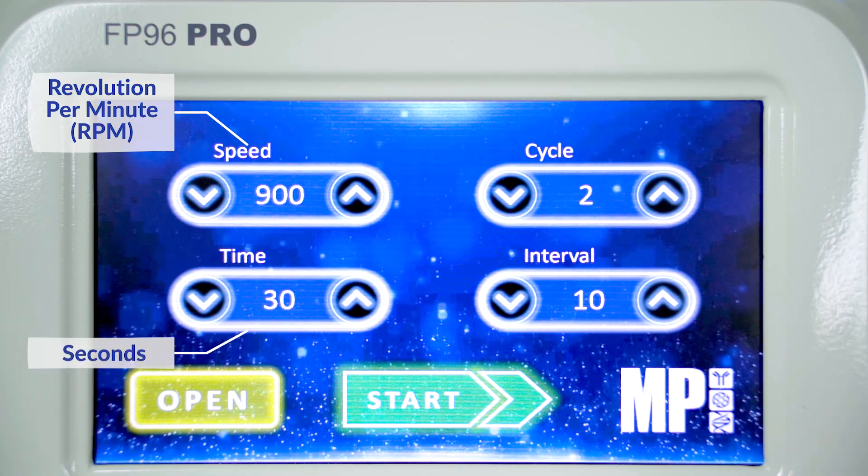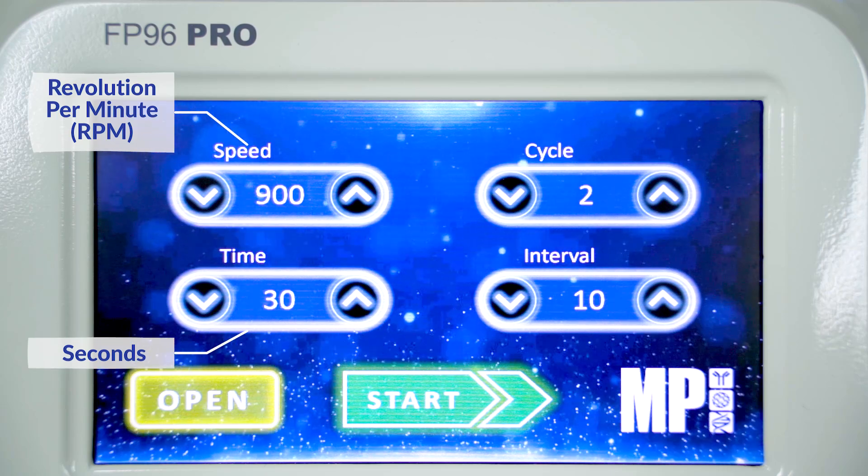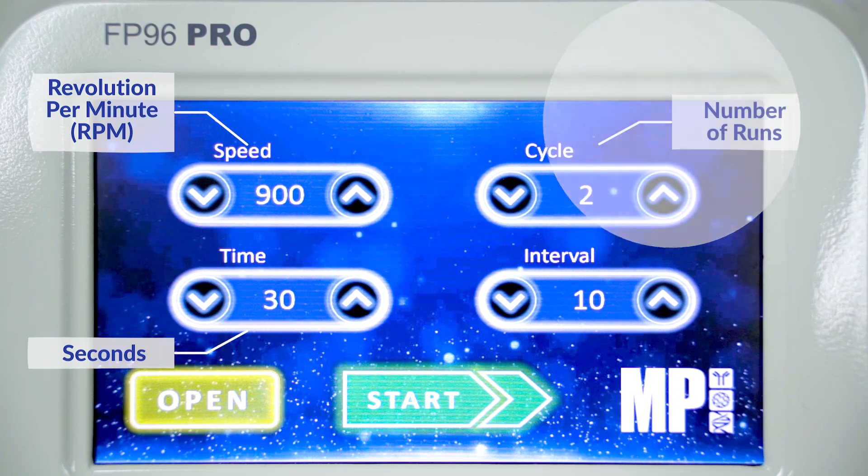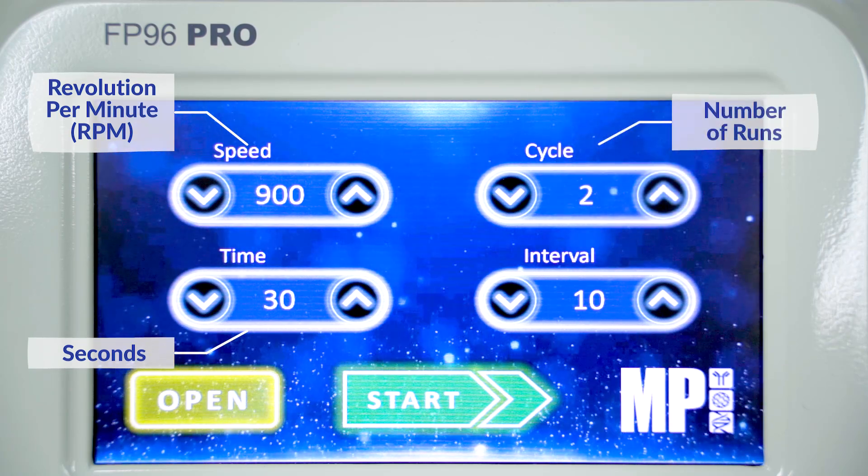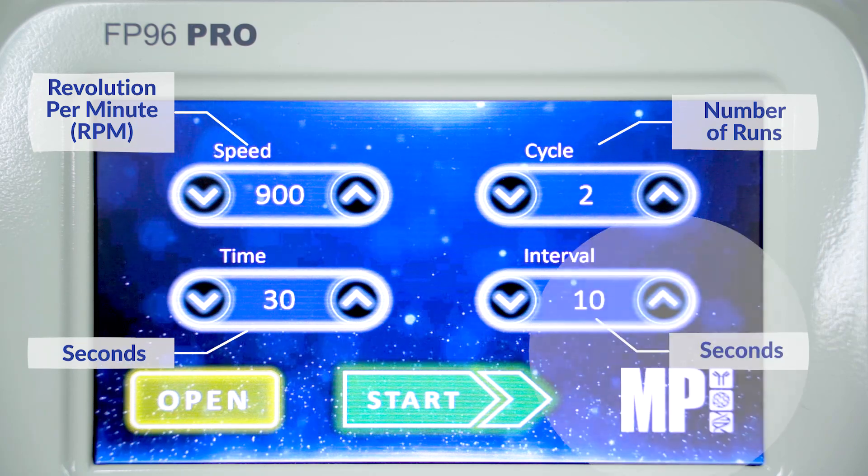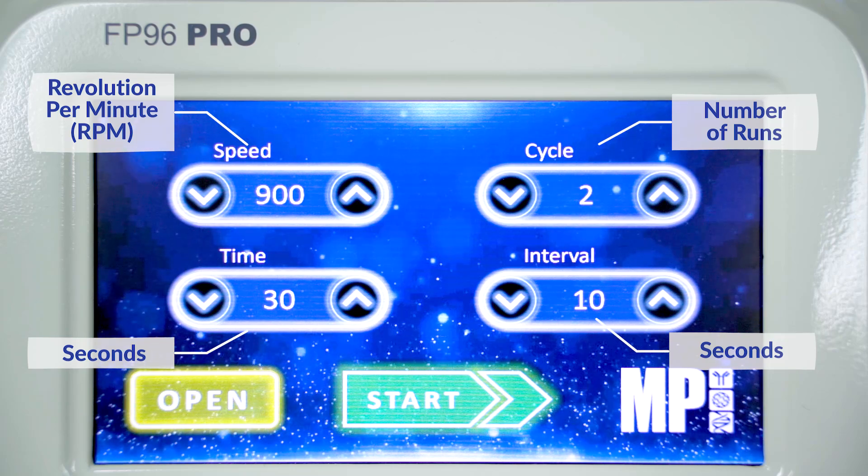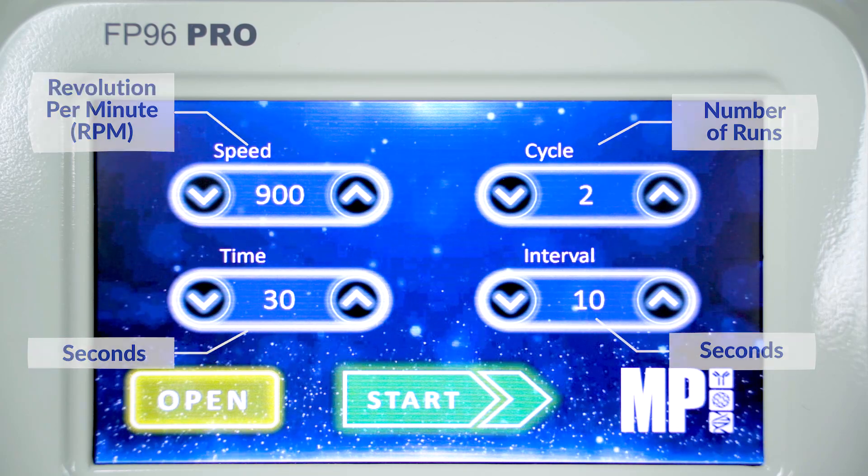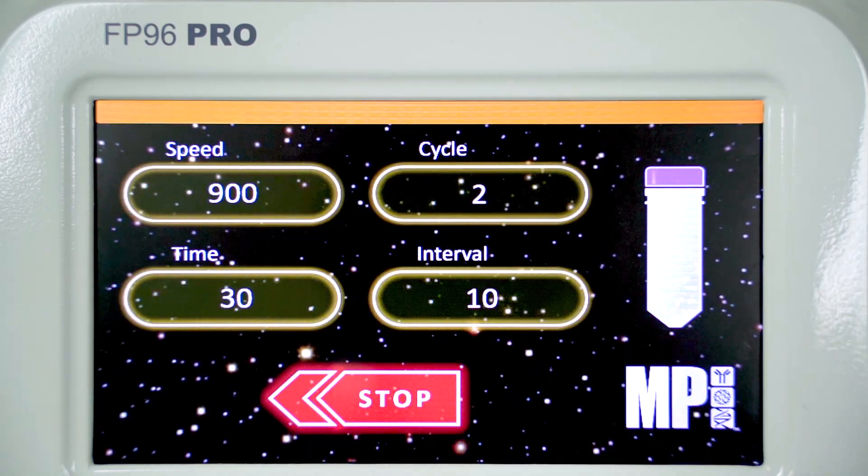Use the up or down buttons to set the desired speed and duration of the run. For multiple cycles, you can press the cycle up or down buttons to adjust the number of runs. The interval button can be adjusted to set the duration of the pauses between each cycle in seconds. Once all parameters are set, press the start button to begin the homogenization.